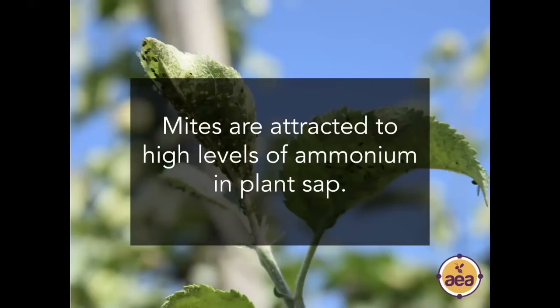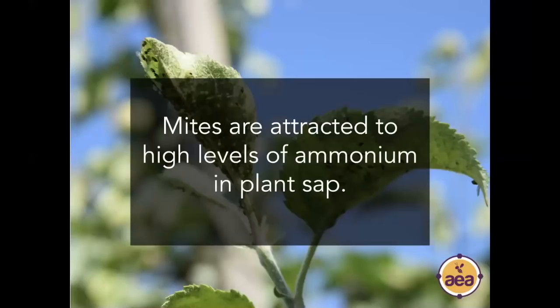Foundationally, spider mites are not just attracted to — they are dependent on — plants that have high levels of ammonium in plant sap. If you can succeed in getting the ammonium levels within plant sap to zero, you will not have spider mites. In fact, even with a severe spider mite infestation in the plant canopy, if you can bring ammonium levels down, the spider mites will disappear — they will either die if they continue to feed on the plant, or they will leave. It is completely possible to change a plant's susceptibility and resistance to spider mites.